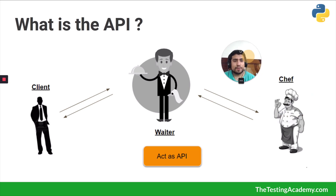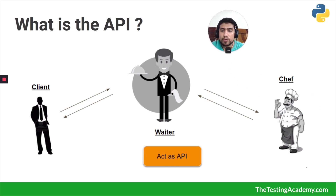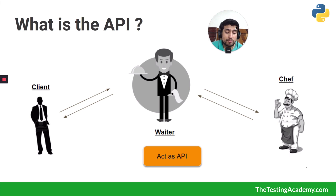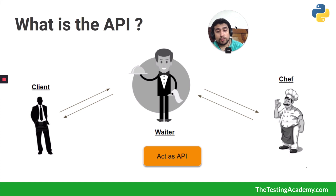Let's understand with a simple example what an API is. Suppose you are a client going to a restaurant. A waiter comes to you, takes your order, goes to the chef. The chef understands what the waiter wants, prepares the food, and after that the food is served to you.